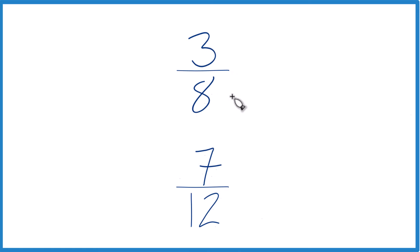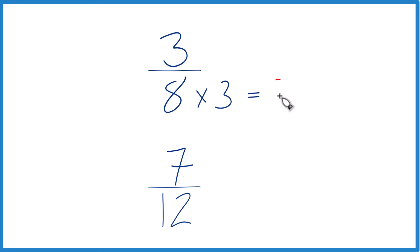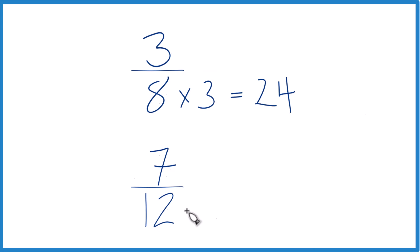You could find a common denominator, though, and work this out. 8 times 3 is 24, and then 12 times 2 is 24. So that would give us a common denominator here.